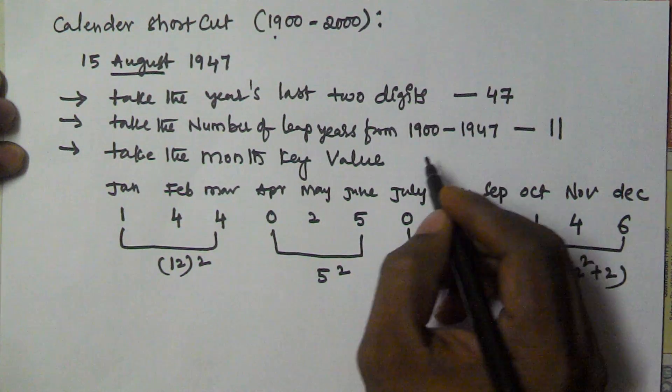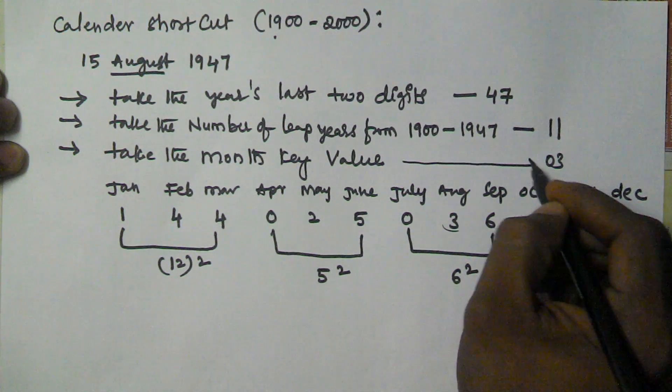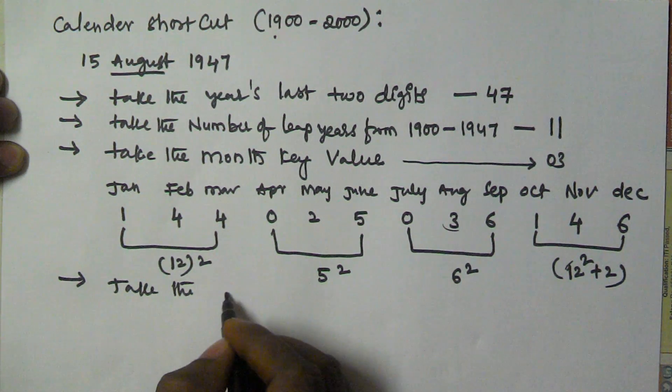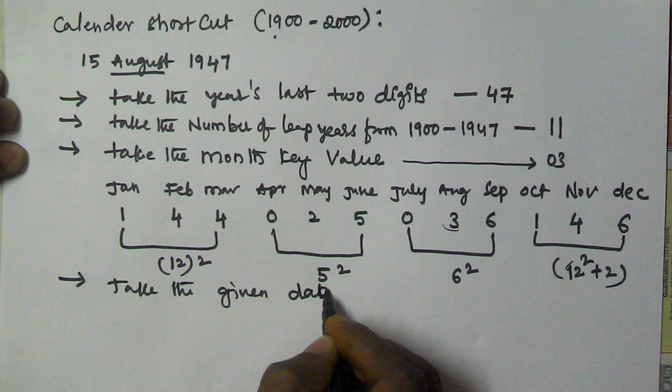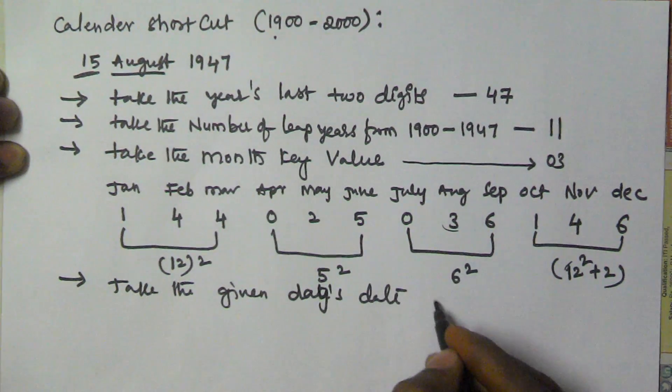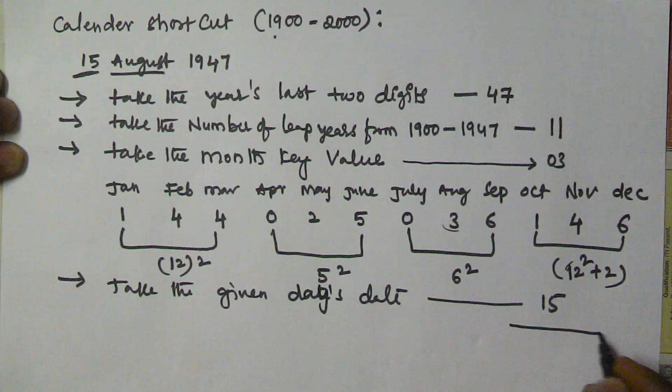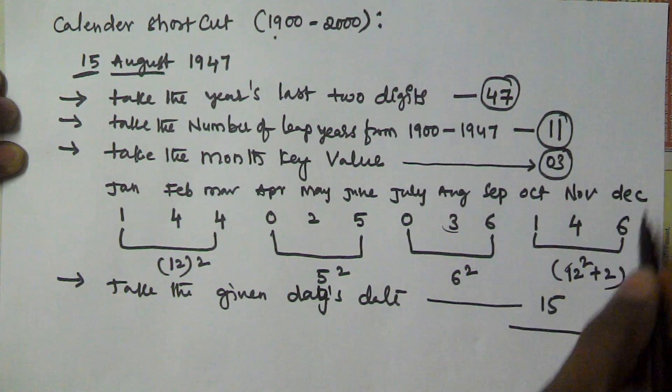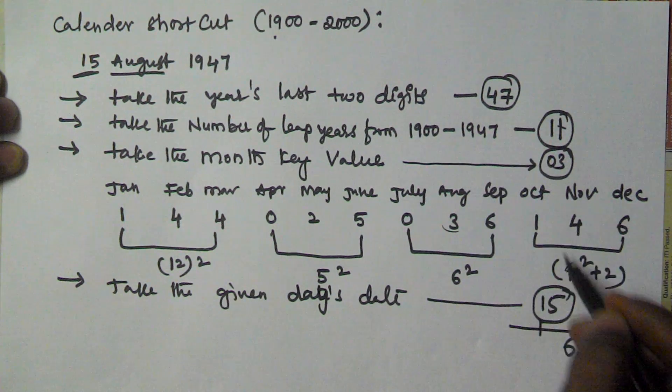Next, take the given day, which is 15. Now we have to add all of them: 47, 11, 3, and 15. That equals 76.